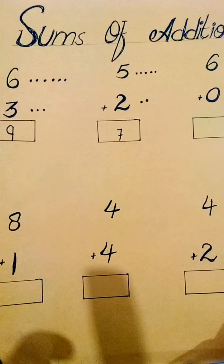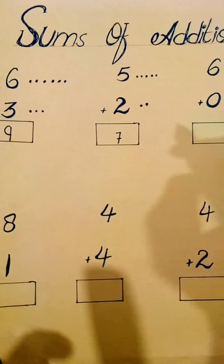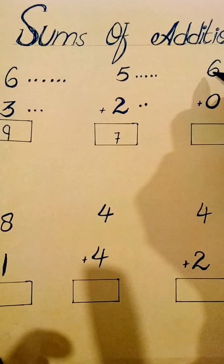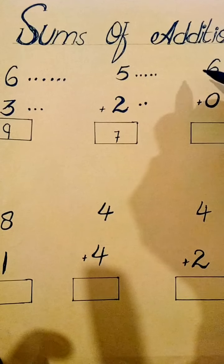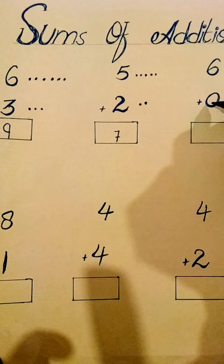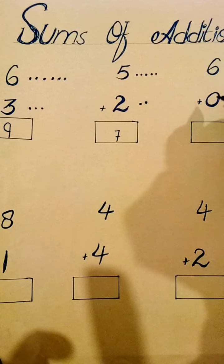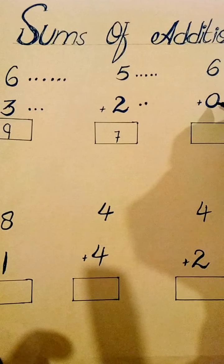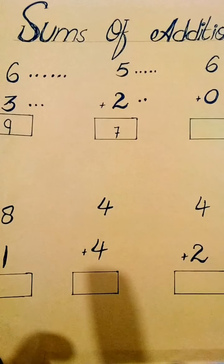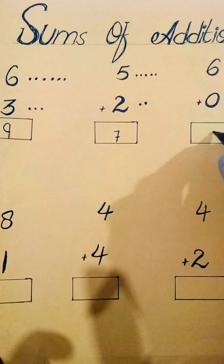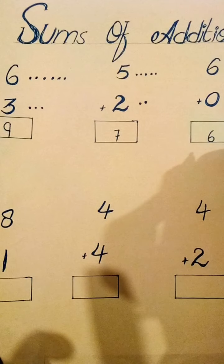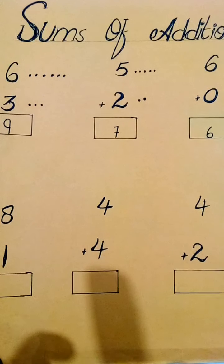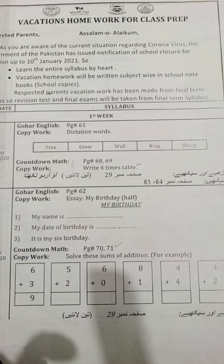यहां पर zero का concept भी समझ लें। जब हमारे पास six है तो हमने six dots लगा लिए। लेकिन zero का मतलब है कुछ भी नहीं — six में zero add करने का मतलब है six में कुछ भी add नहीं करना, तो answer six ही रहेगा। Six plus zero equals six।